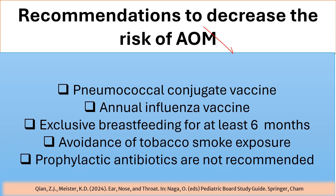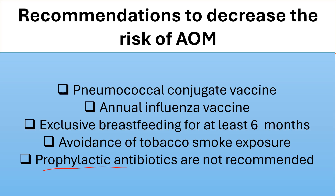Recommendations to decrease the risk of acute otitis media include pneumococcal vaccine in children less than 5 years of age, annual influenza vaccine, exclusive breastfeeding for at least 6 months, avoidance of tobacco smoke exposure, and it is important to know that prophylactic antibiotics are not recommended.